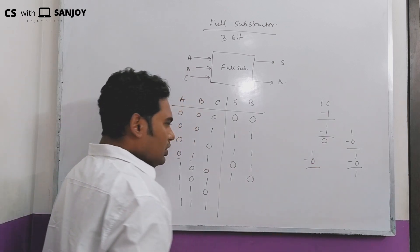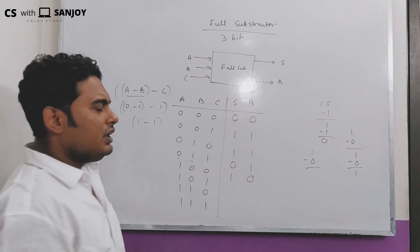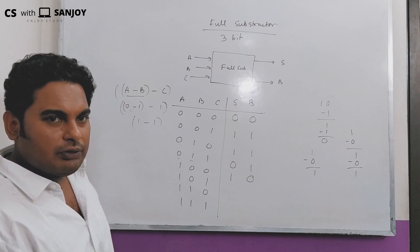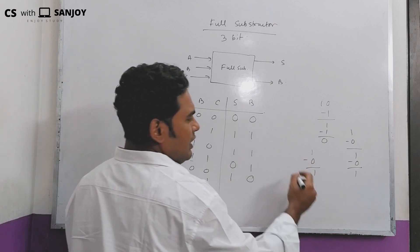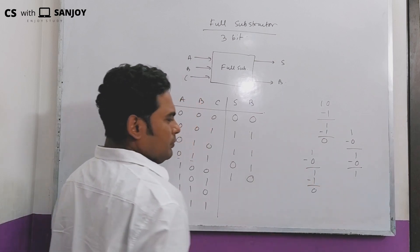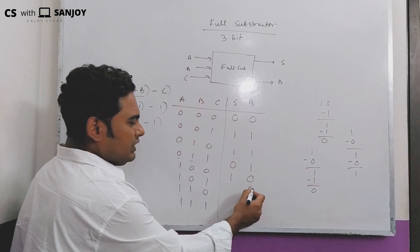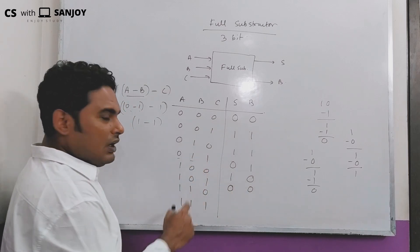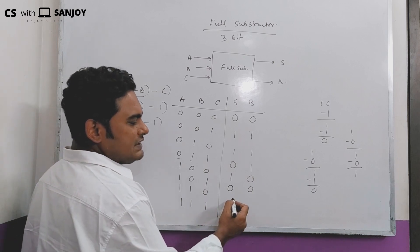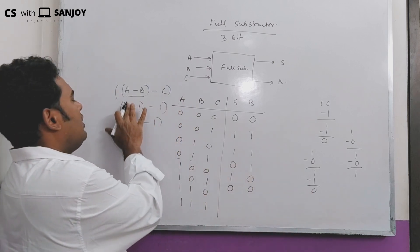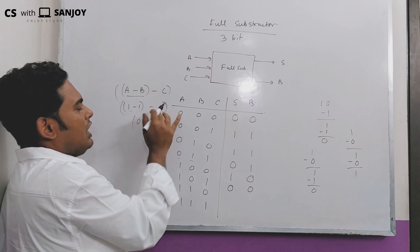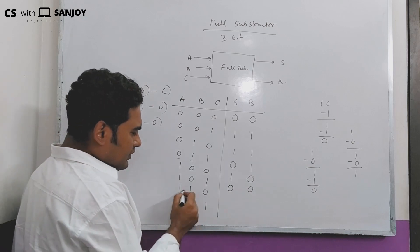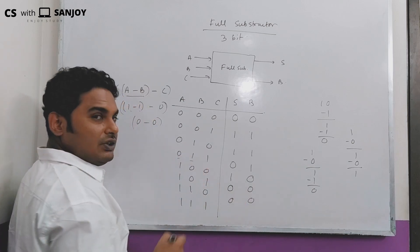1 minus 0 is 1. We take 0 for 1. That is the subtraction — we take off that one because we are going to borrow. 1 minus 1 is 0, with borrow 0.